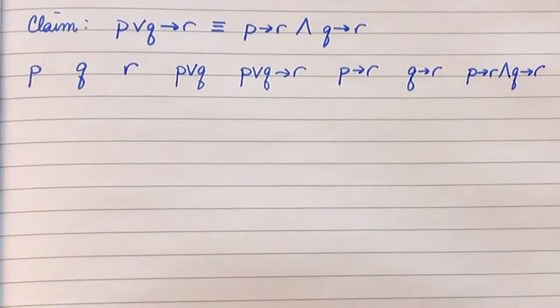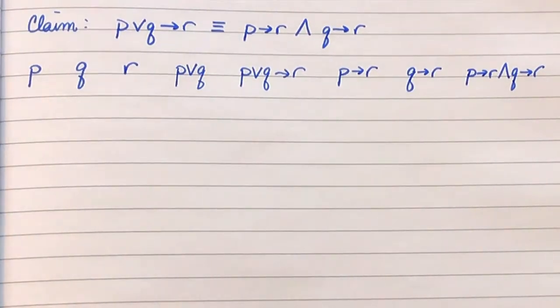So I am not going to do any two steps at once here. We are going to do one step at a time. For the component variables, there are going to be eight different combinations of truth values for P, Q, and R.